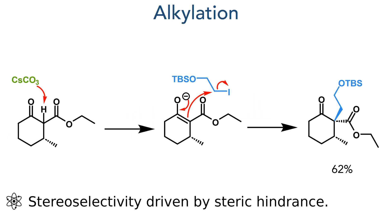So let's start with the synthesis. This started with the alkylation of a keto ester by first generating an enolate at the alpha position, which then reacted with an alkyl iodide, forming the quaternary centre in a 62% yield, with the stereoselectivity driven by the steric hindrance of the methyl group and the adjacent carbon centre. This methyl group had been introduced stereoselectively using previously reported methodology utilising a chiral catalyst.